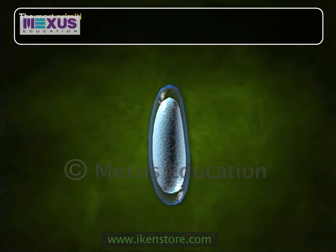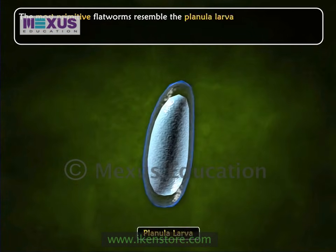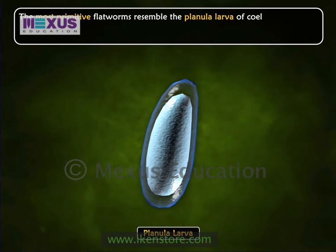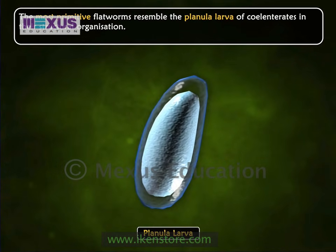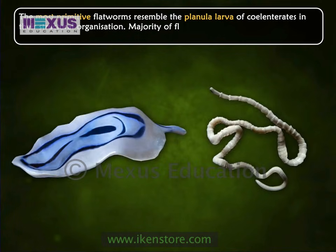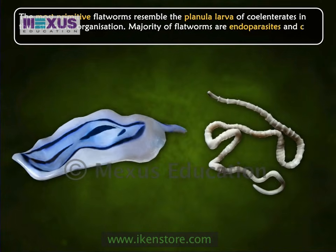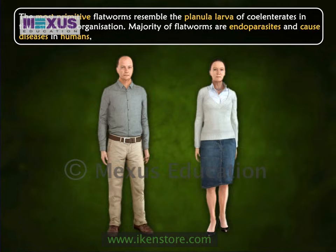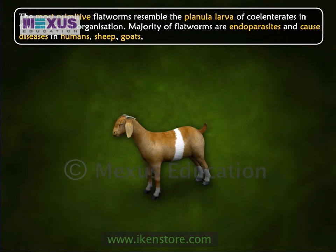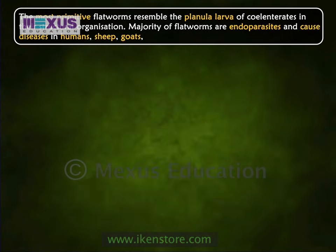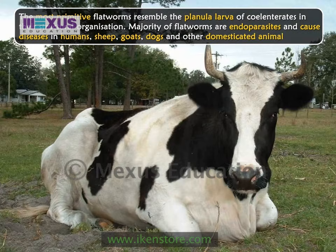The most primitive flatworms resemble the planula larvae of Coelenterates in their structural organization. The majority of flatworms are endoparasites and cause diseases in humans, sheep, goats, dogs, and other domesticated animals.